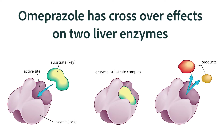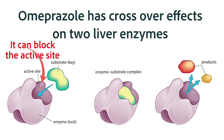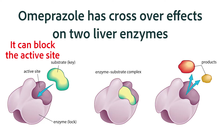However, there is another issue with enzymes that's relevant to the proton pump inhibitors. In some cases, medications may have a molecular structure that can bind to another enzyme or another receptor that they're not supposed to bind to — in other words, medications can have crossover effects. Some, not all, of the proton pump inhibitors have that crossover effect.